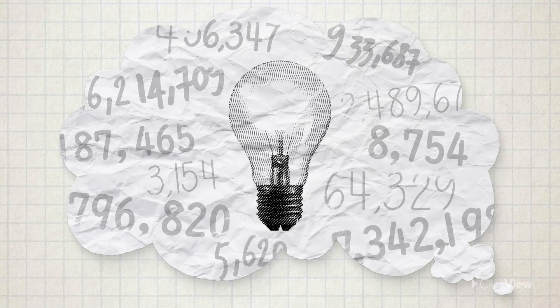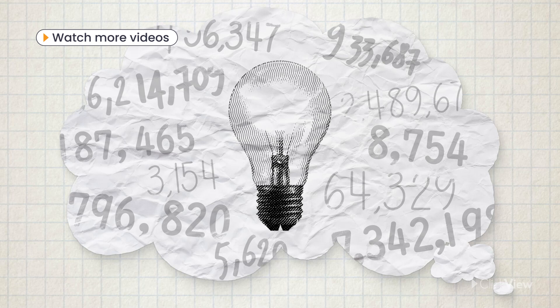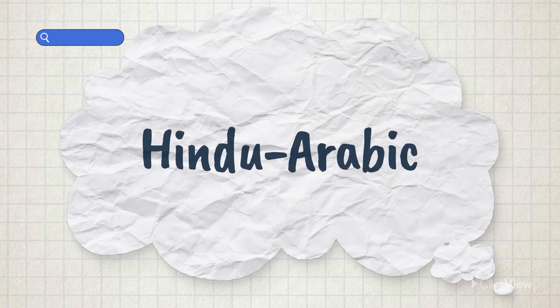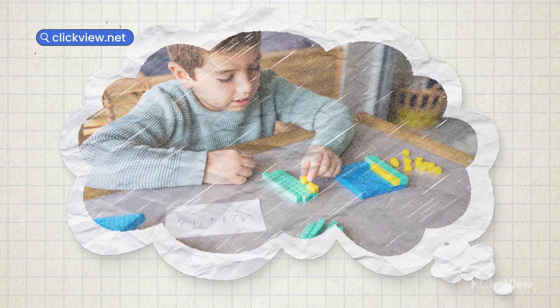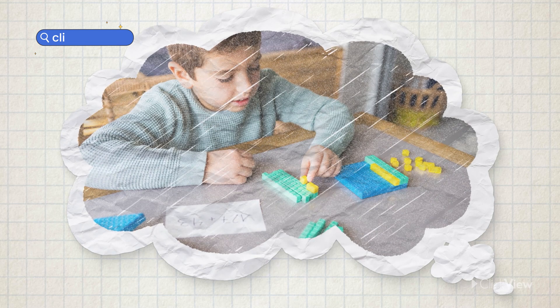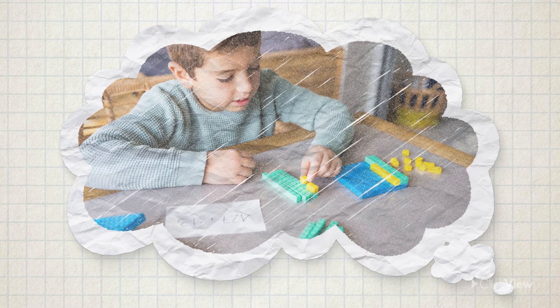Have you ever thought about how we read and write numbers? The number system we use today is called the Hindu-Arabic system, and it's a base 10 place value system.